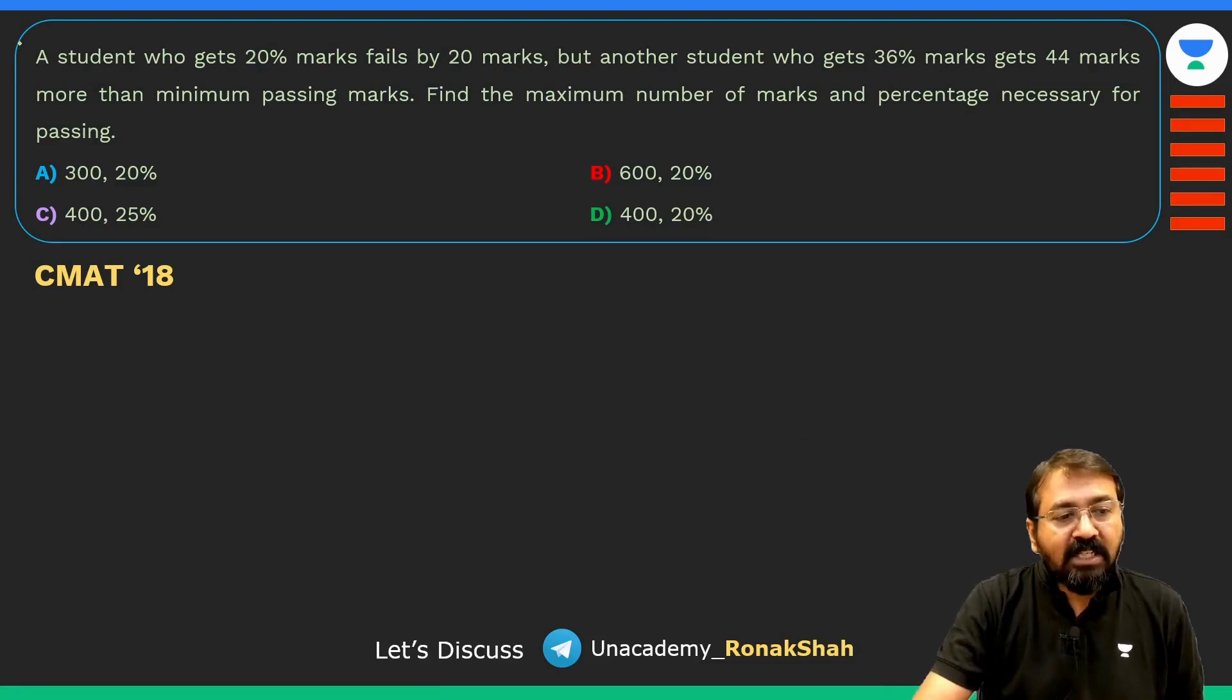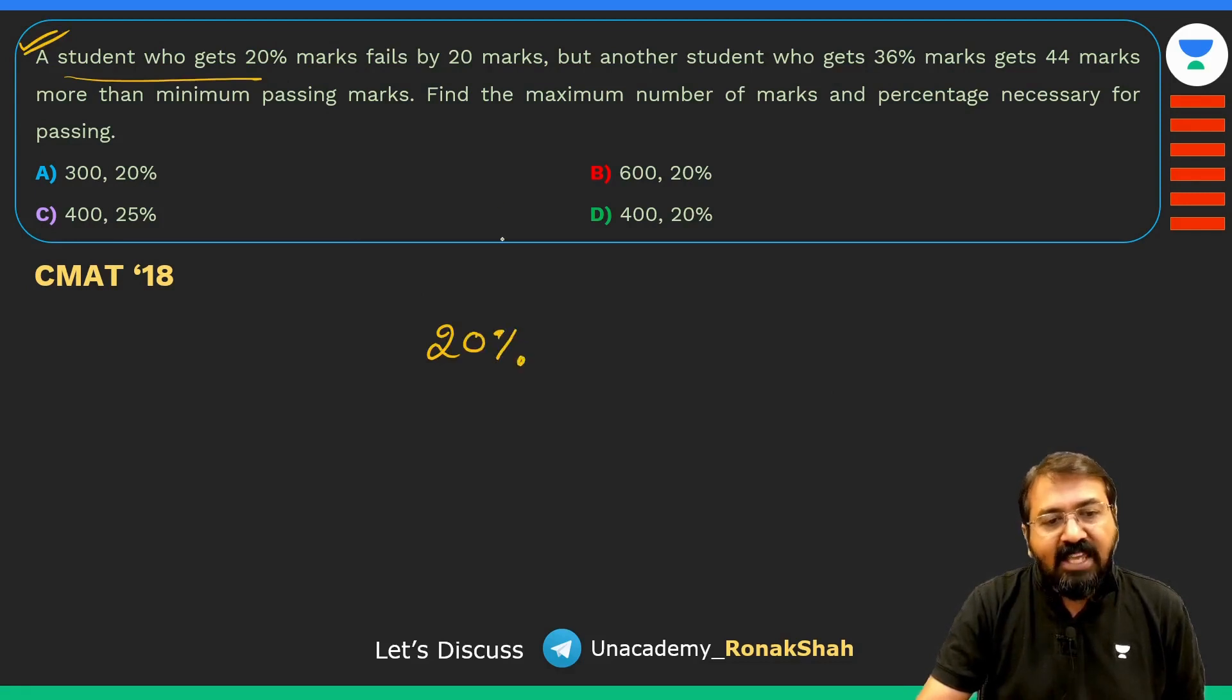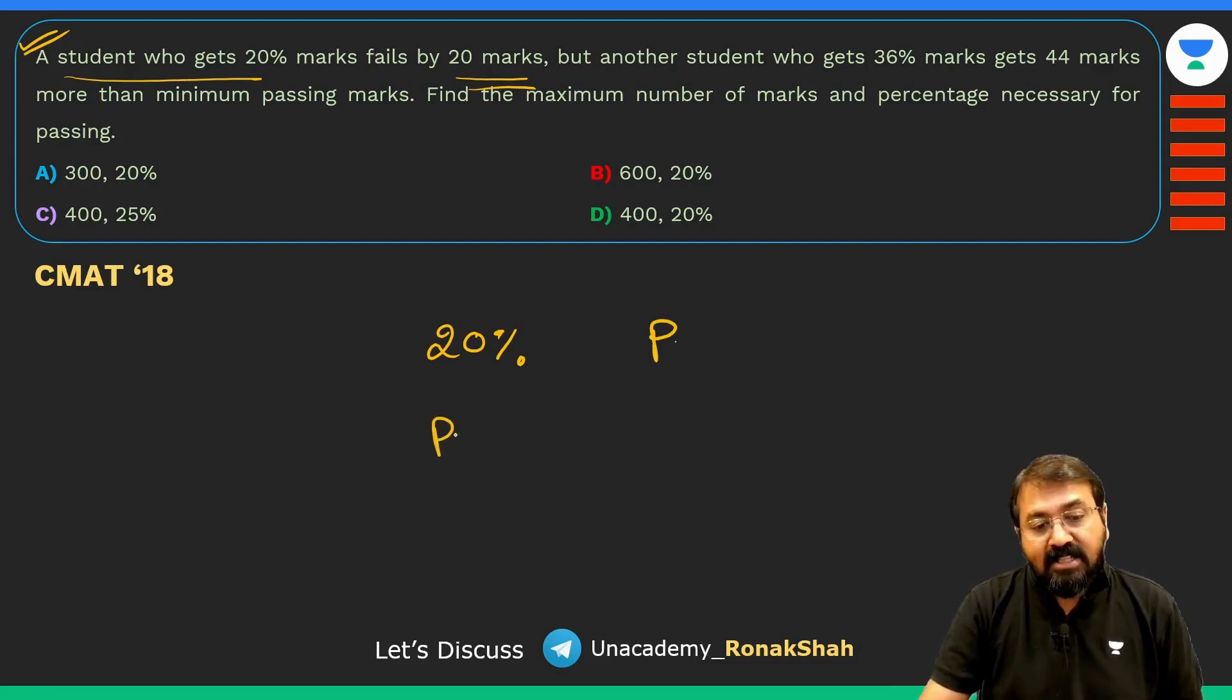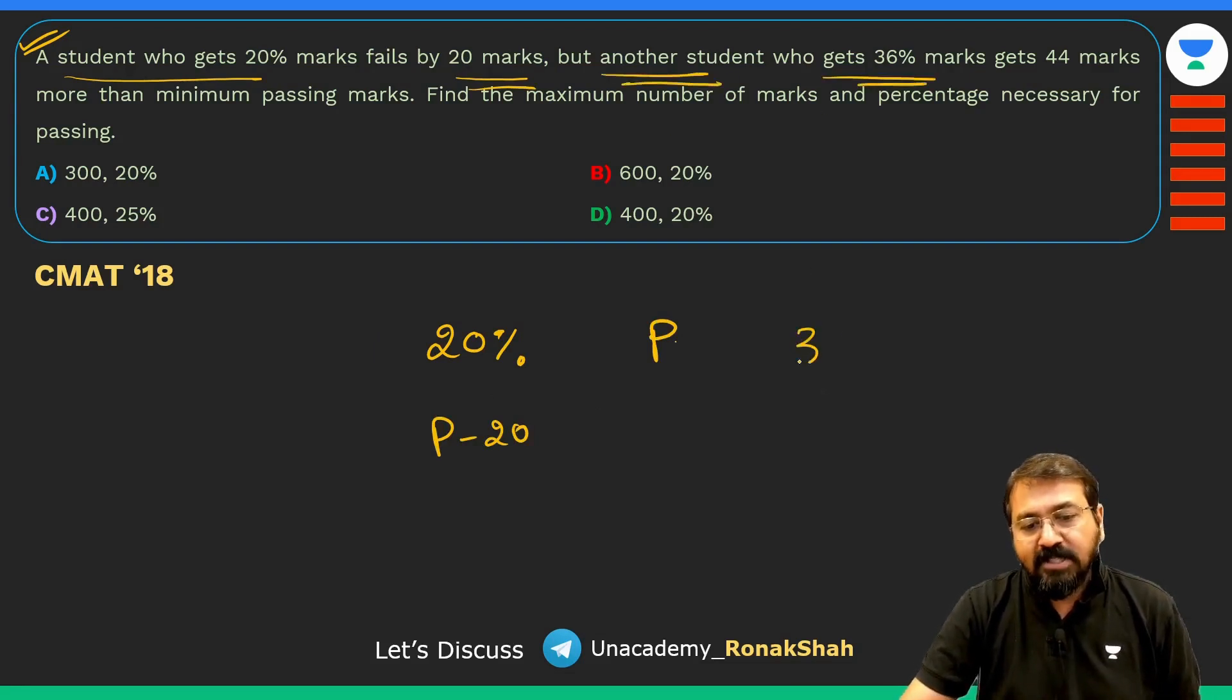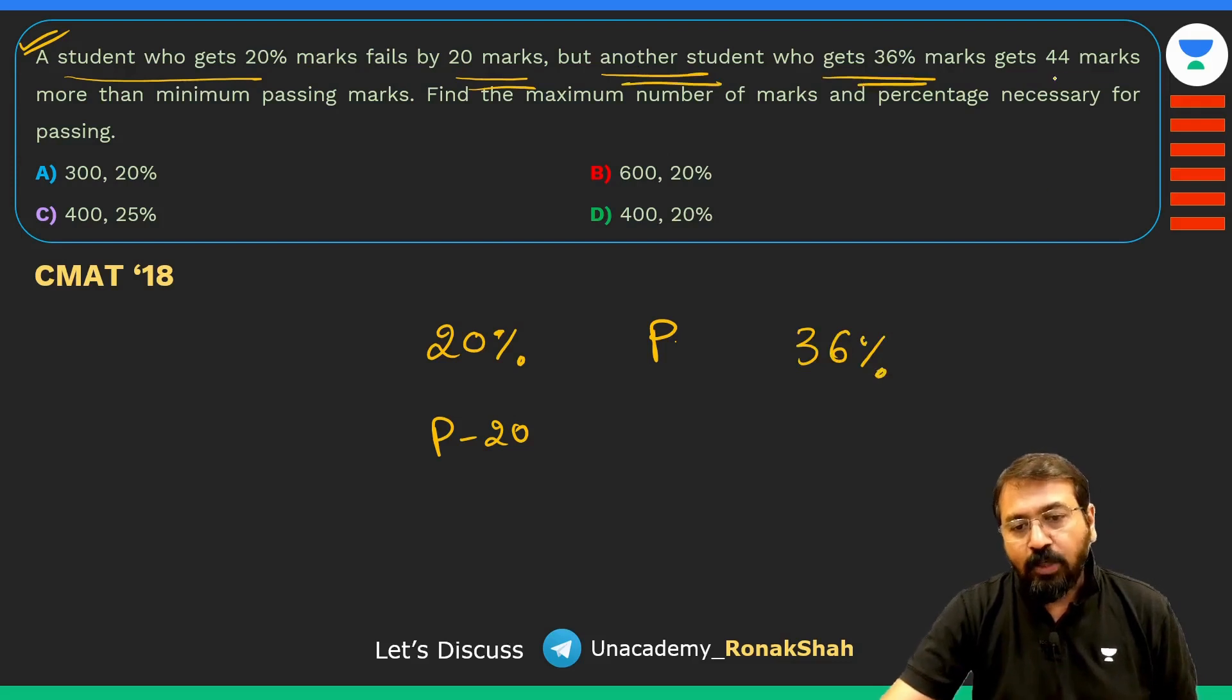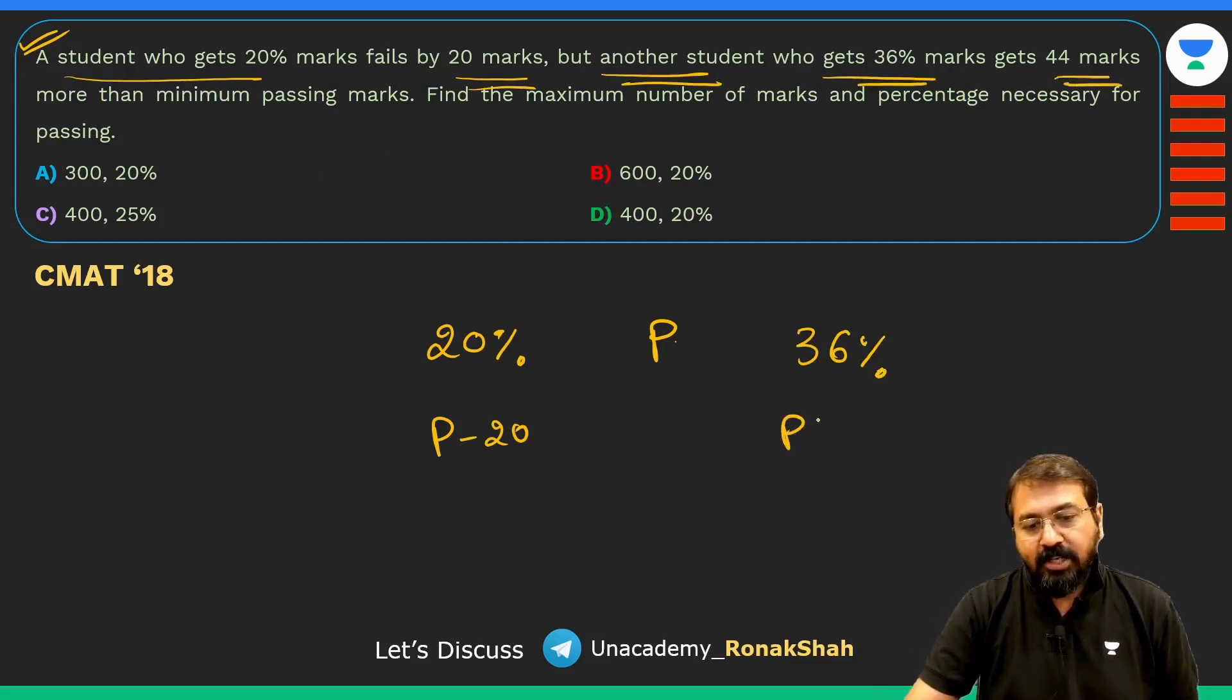A student gets 20% marks and fails by 20 marks, it's 20 marks less than the passing marks. Another student who gets 36% marks gets 44 more than the passing marks, so it's P plus 44.